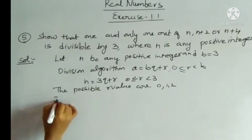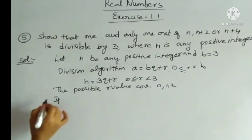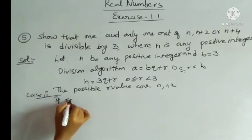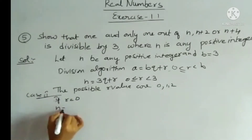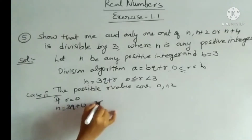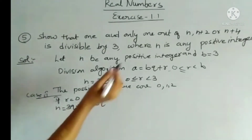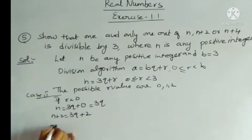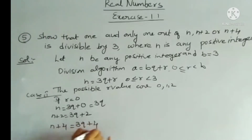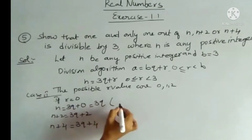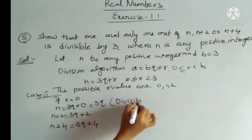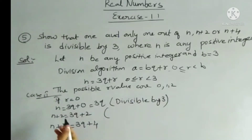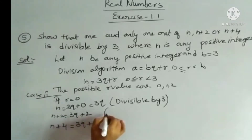We divide this problem into three cases. In Case 1, if r = 0, then n = 3q + 0, which is simply 3q. And n + 2 = 3q + 2, which is not of the form 3 times something, so it is not divisible by 3.